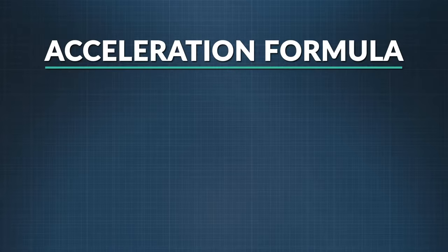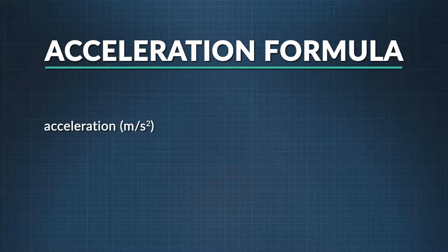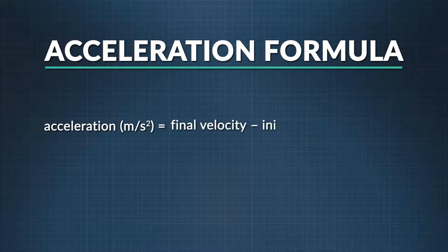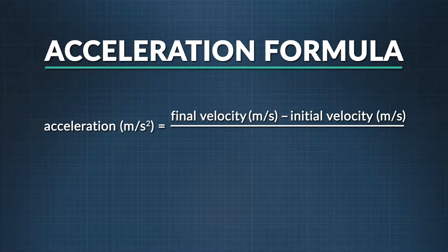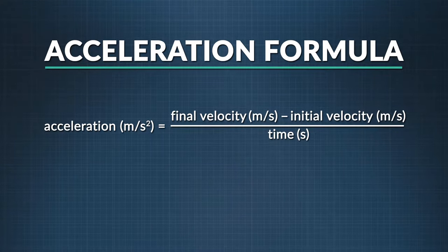The formula for finding acceleration goes like this: the acceleration of an object, measured in meters per second squared, is equal to the final velocity of the object minus the initial velocity of the object, both in meters per second, divided by the time taken in seconds.